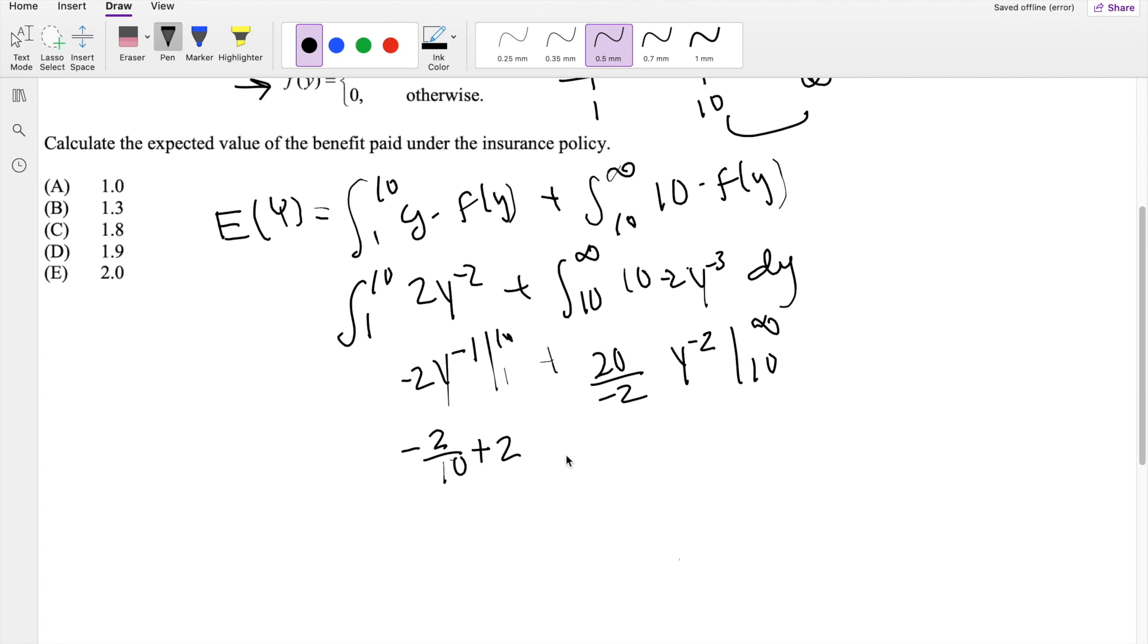And right here, plugging in the upper limit, technically think of this as like 1 over Y, where Y is infinity. So 1 over infinity, 1 over a really big number, is just going to give you 0. So this whole value here is going to be 0, and this is negative negative, so that's positive. 10 over 100, which is equal to 1.9, our answer, D.